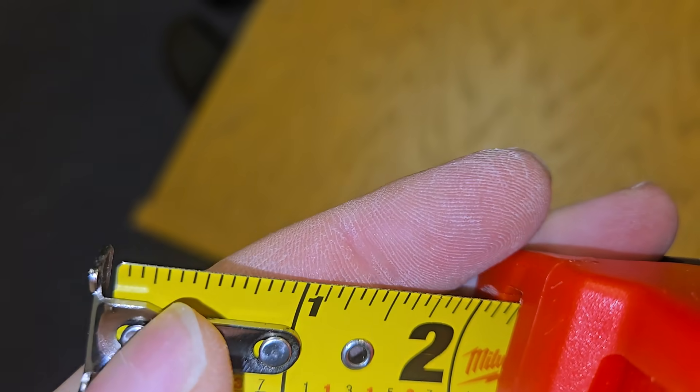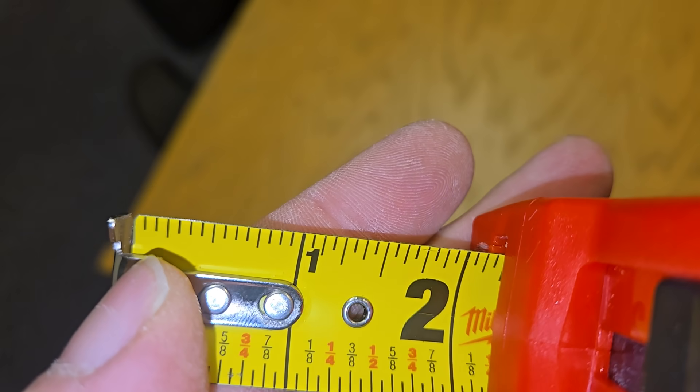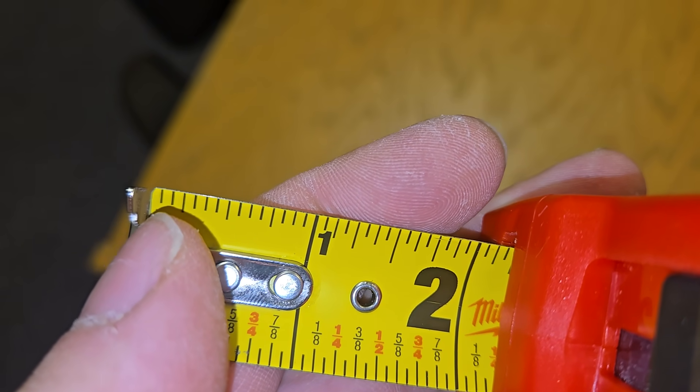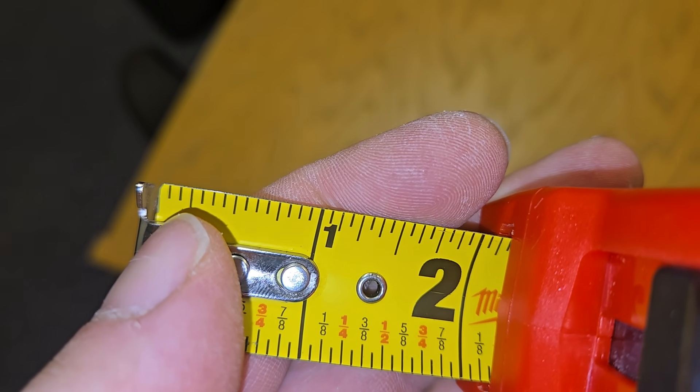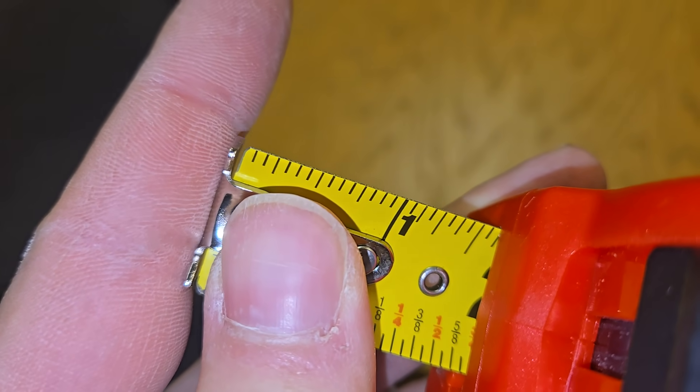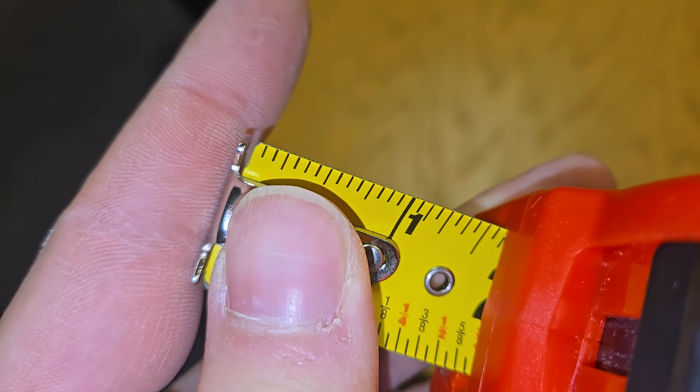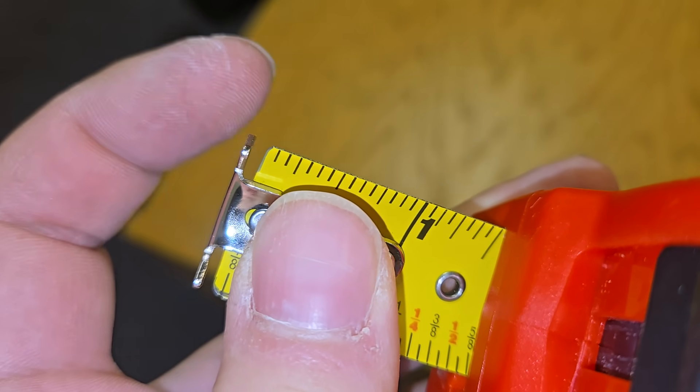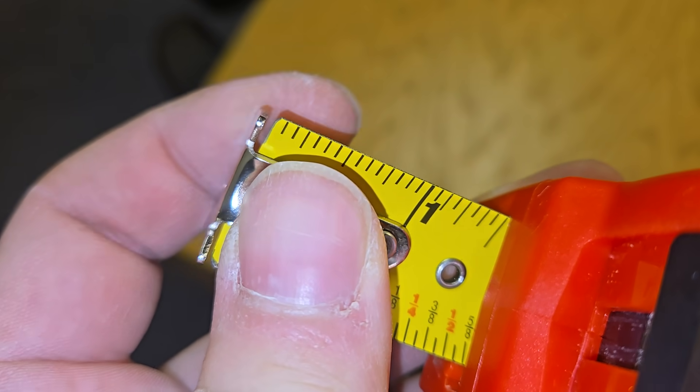If you look here on our one-inch mark you can see we're actually missing 1/16th of an inch from our measuring tape which is made up by the gap that this metal piece moves.